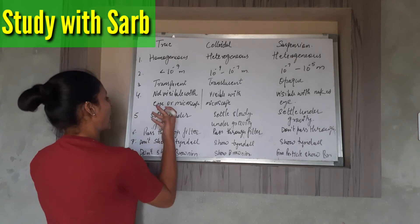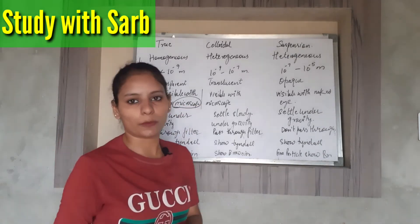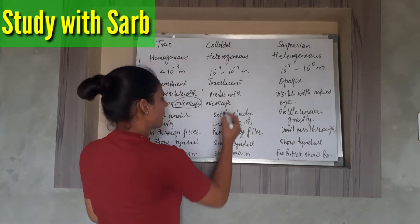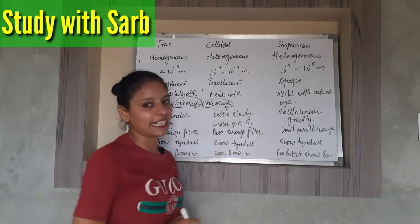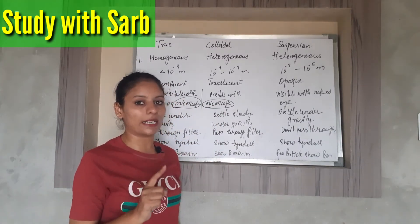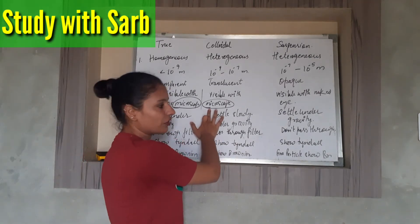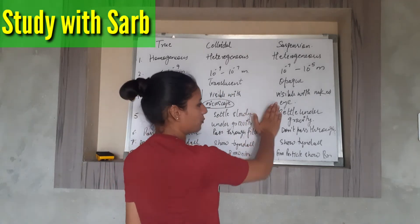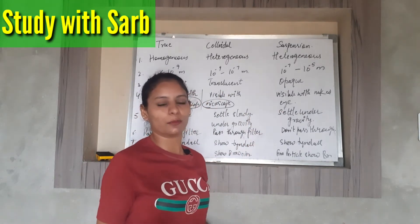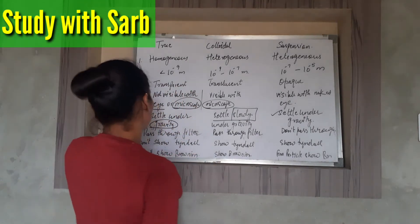The particles of a true solution cannot be seen with the naked eye, and they are also not visible even under a microscope. In colloidal solution, the particles cannot be seen with the naked eye, which is why they appear homogeneous — they can only be seen with a microscope. Suspension particles do not need a microscope because we can see them with the naked eye directly.